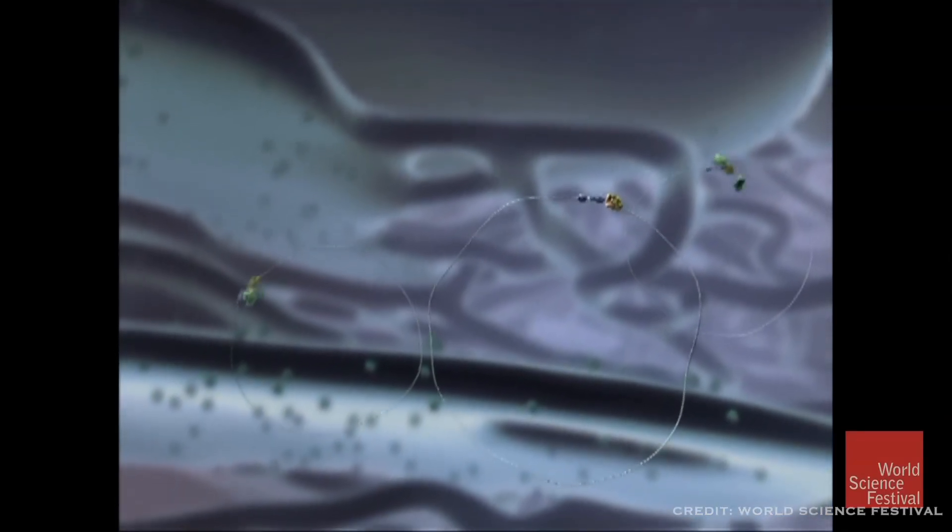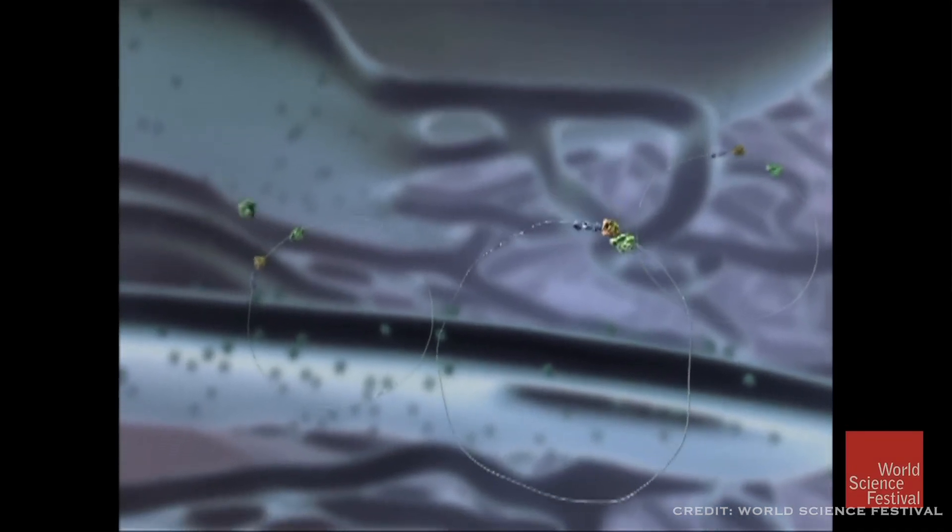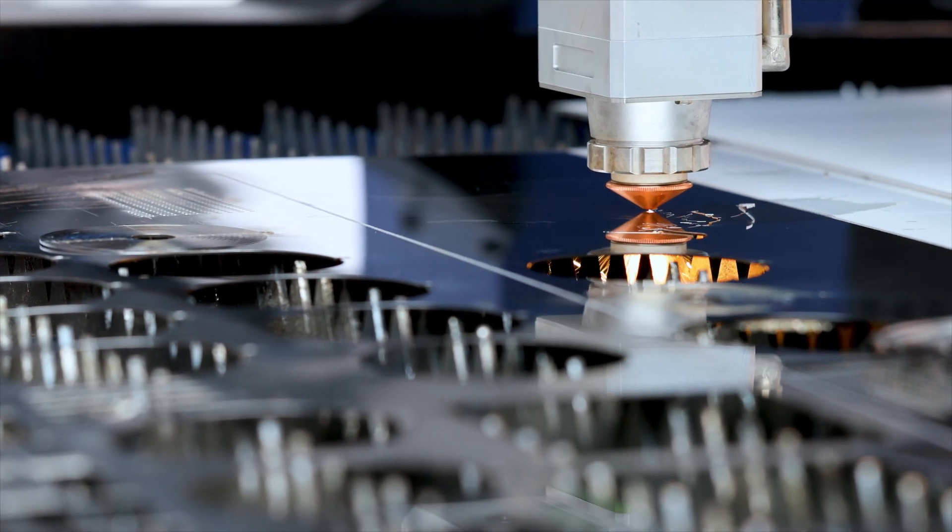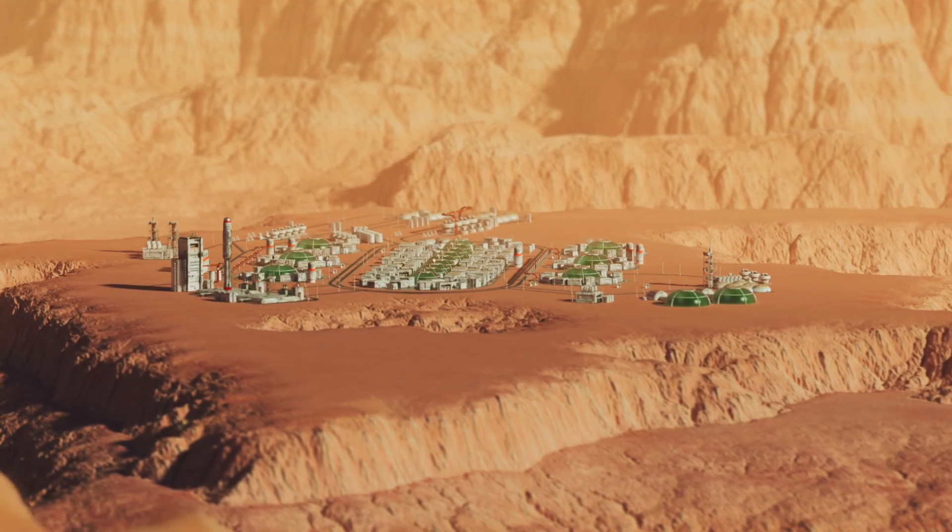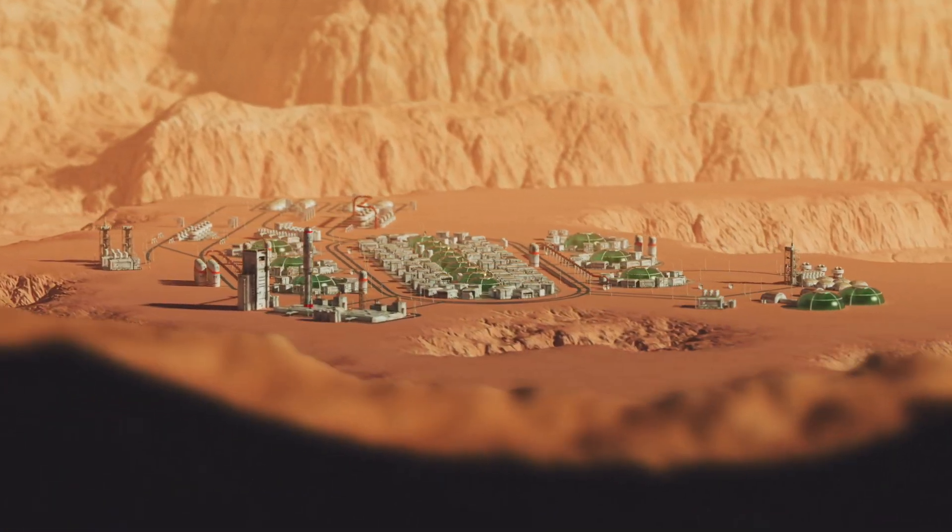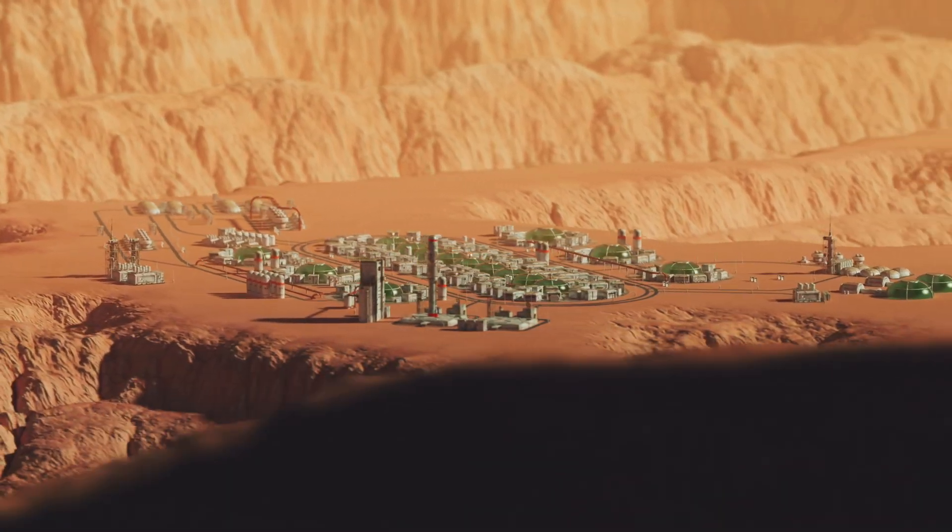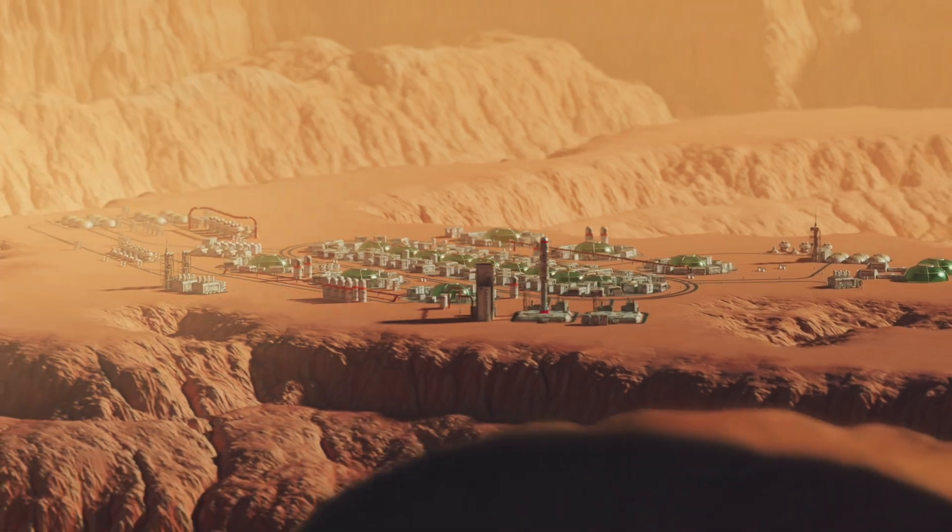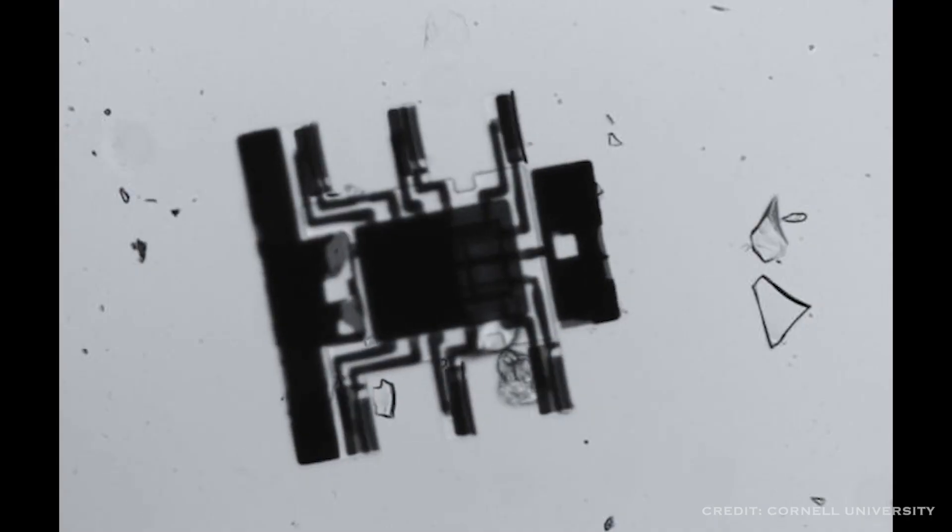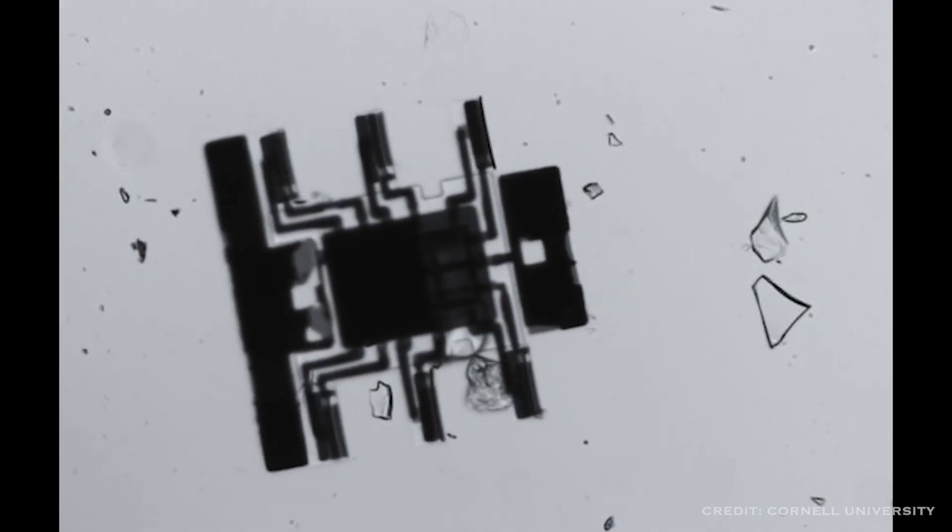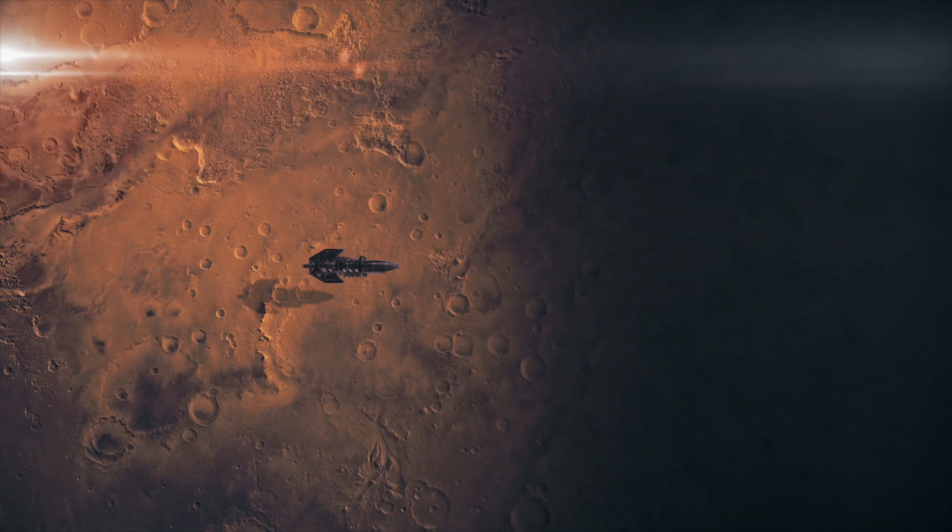Walls rise from the red soil, intricate life support systems take place, and radiation shielding forms layer by layer. Within weeks, a fully functional base stands ready on Mars. Created entirely by microscopic machines, following pre-programmed instructions. It's a triumph of engineering, and a testament to the power of nanotechnology.